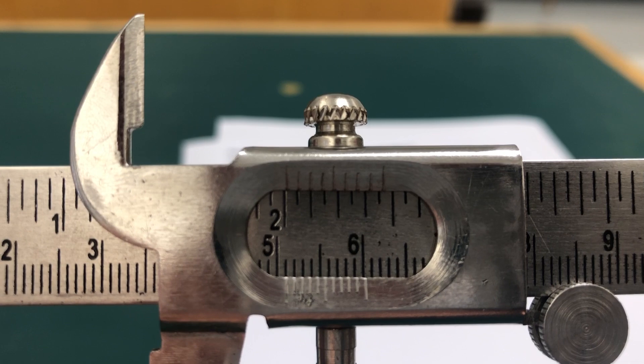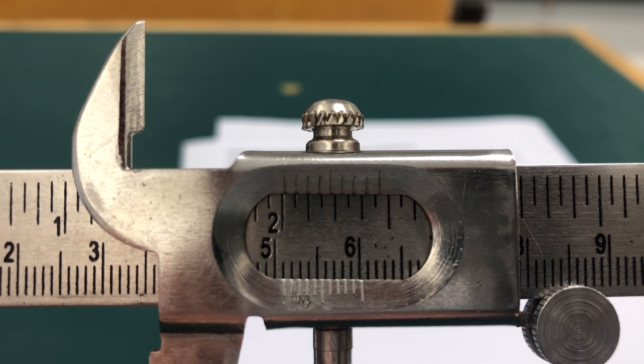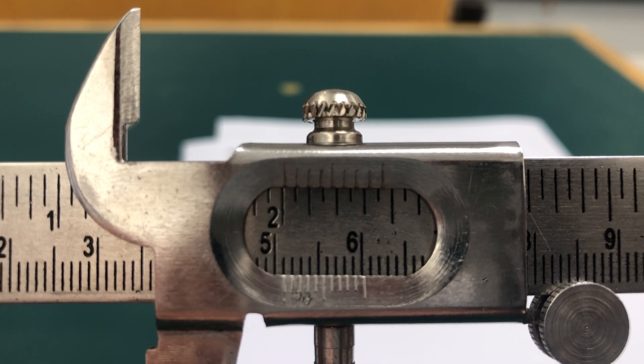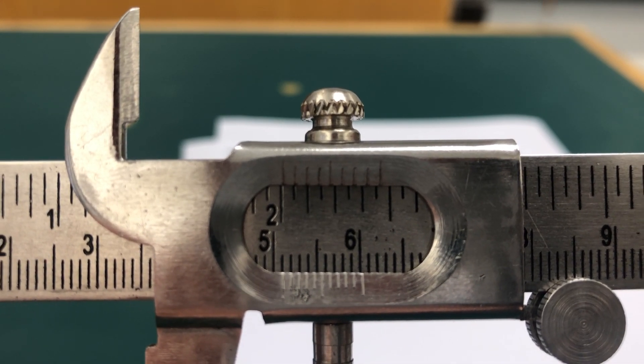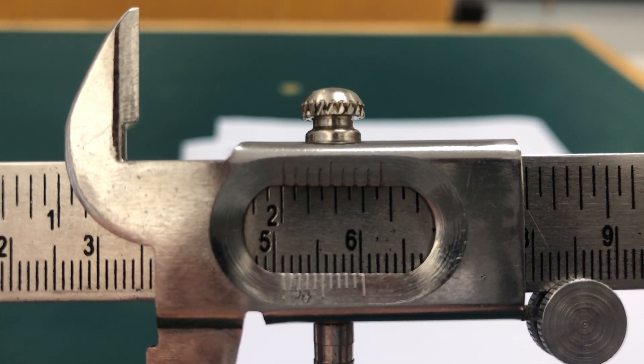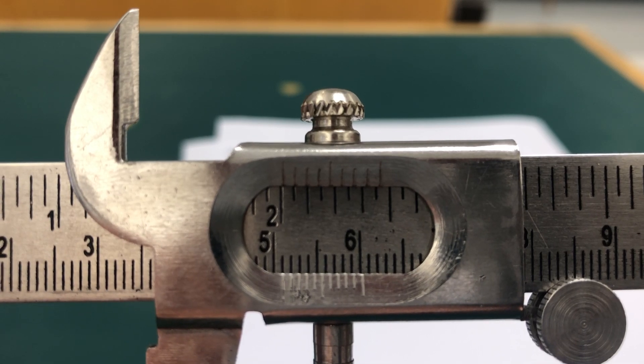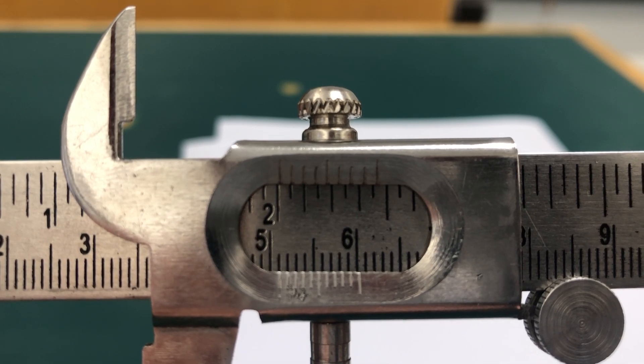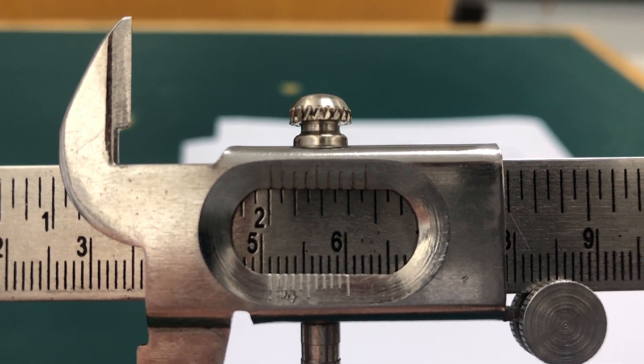1 centimeter is our measurement. Once again, the zeroth mark is in between 5.1 and 5.2, and it's the first mark on the vernier, the first vernier mark that lines up with the top scale, the centimeter scale.